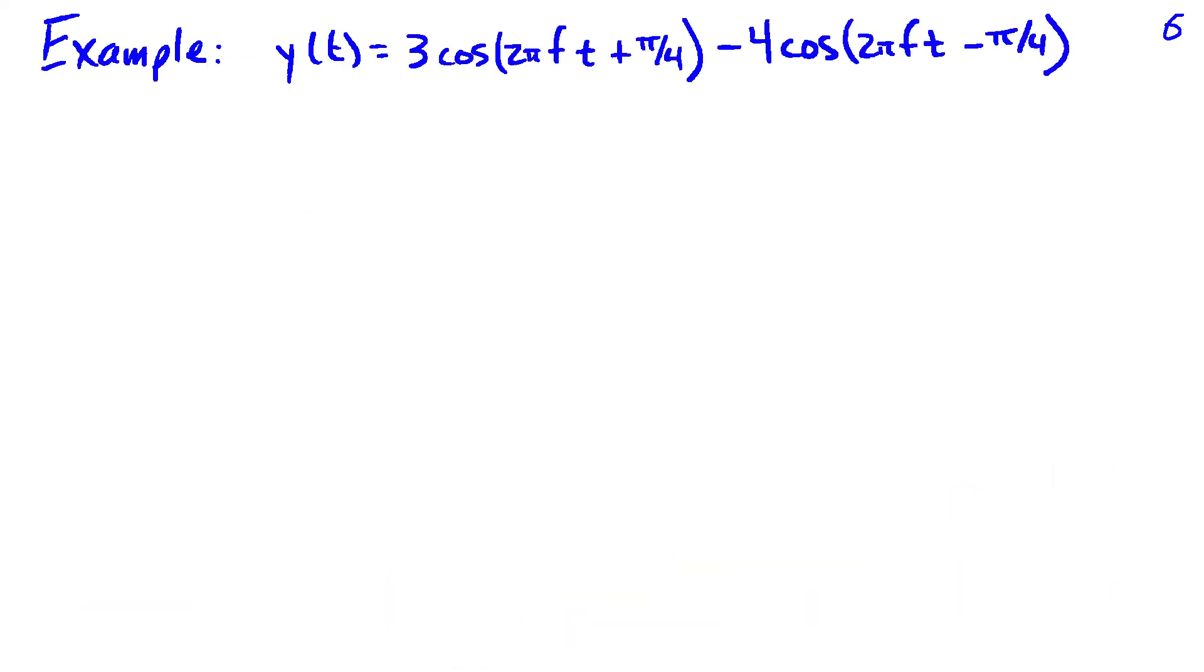We'll do one more example before we conclude. In this case, I'm going to add up a sinusoid with amplitude 3 and phase pi over 4, and I'll subtract 4 cosine 2 pi ft minus pi over 4. So the frequency is the same. Hence, we can apply the phasor addition rule.